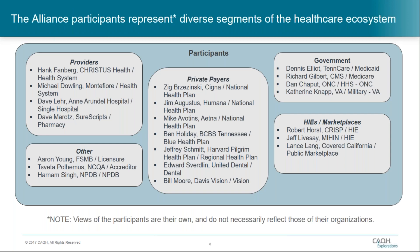The Action Alliance consists of representatives from all across the healthcare industry. In addition to providers and health plans, we had representatives with deep experience from government stakeholders, HIEs, health insurance marketplaces, as well as accreditors and licensing boards. These individuals brought tremendous depth of expertise and perspective and committed significant time to produce the draft roadmap as it stands today. It should be noted that these individuals are speaking on behalf of themselves and not their organizations, though we do look to them as industry experts.